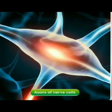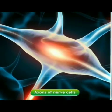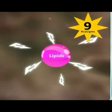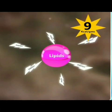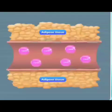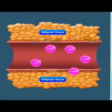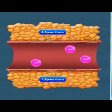Fatty acids also form the covering around the axons of nerve cells. We get 9 kilocalories of energy per gram of lipids. Excess lipids are stored in adipose connective tissue in the body.